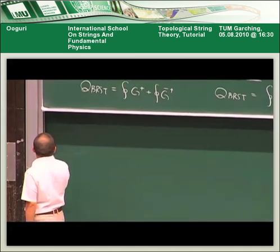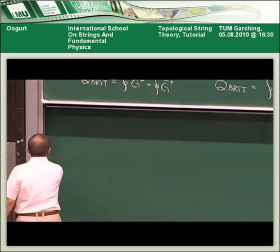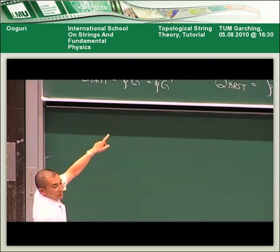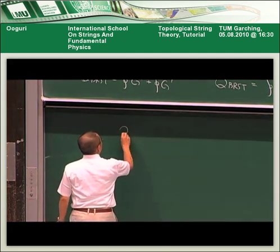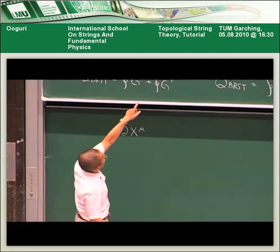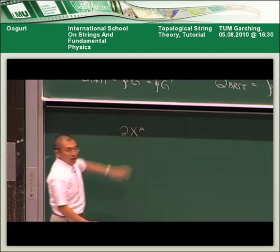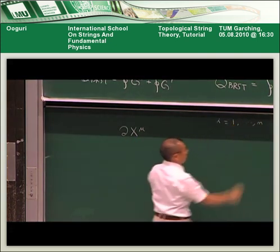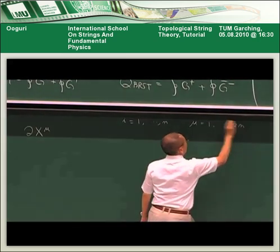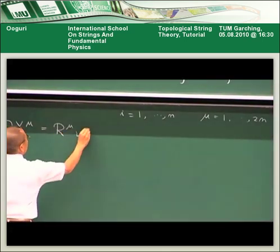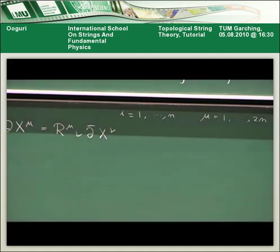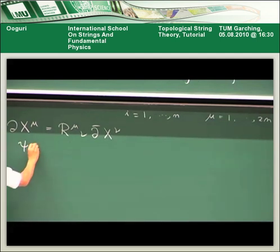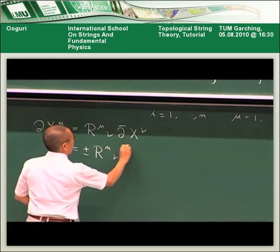Let me give you some hint on how you can start thinking about this problem. Suppose you consider a little bit more general condition than the Dirichlet and Neumann condition. Suppose you impose a condition that del μ... Here I'm choosing complex coordinate i and i bar, but suppose I choose some real coordinate x^μ. i was going from 1 to n. For example, in the case of Calabi-Yau n-fold, μ can go from 1 to 2n. So suppose you consider a general mixed boundary condition like that.